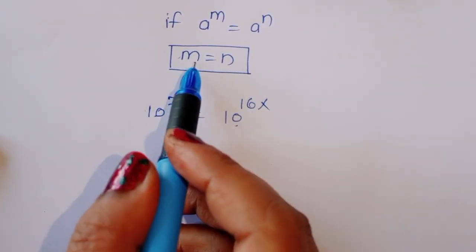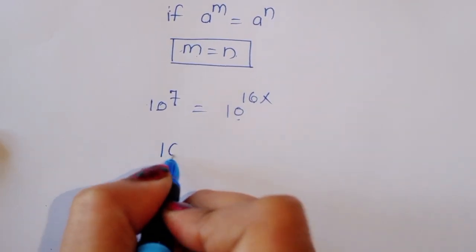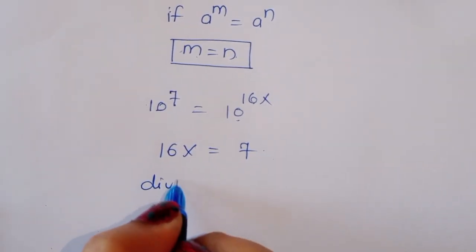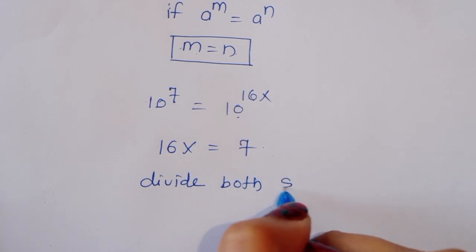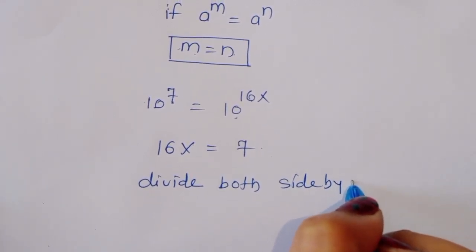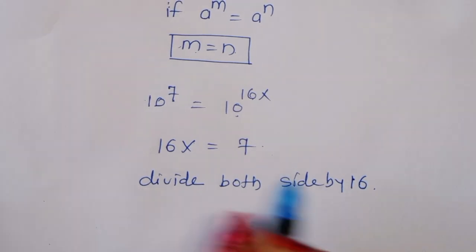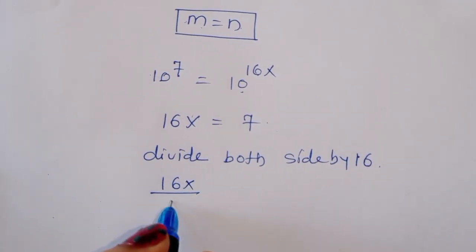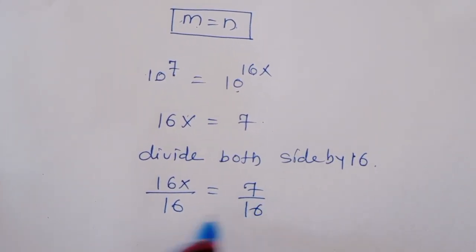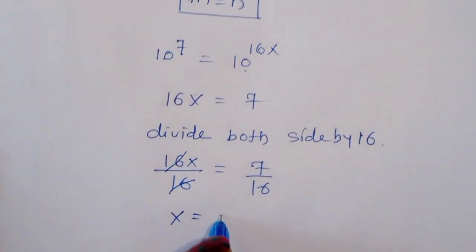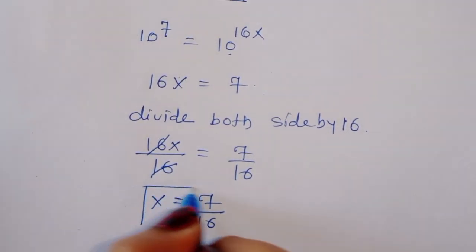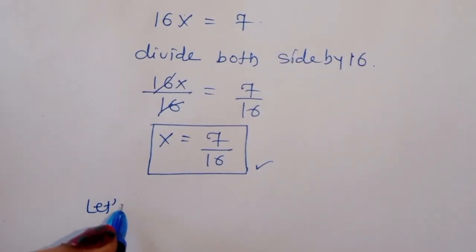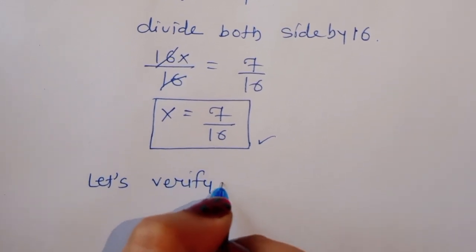10 raised to 7 is equal to 10 raised to 16x. We also know the formula: if a raised to m equals a raised to n, then m equals n. Comparing, we get 7 equals 16x, so 16x equals 7. Dividing both sides by 16, x is equal to 7 upon 16.